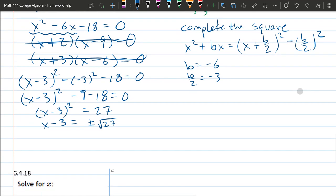Unfortunately, 27 is not going to be a perfect square. Let's see, 27 is 3 times 9, or 3 times 3 squared. So I can bring the 3 squared outside. 3 squared of 3, x minus 3. x equals, add the 3 to the other side, 3 plus or minus 3 square root 3.